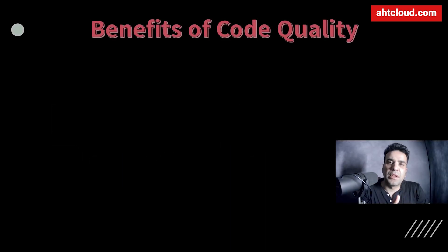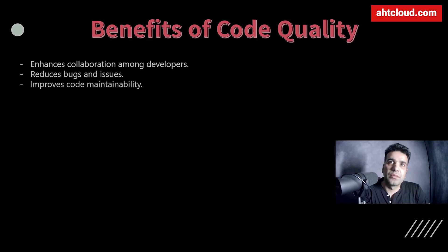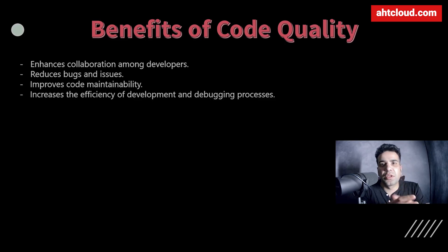Some of the benefits of code quality are: it basically creates a standard — everyone knows how they should name their variables, their functions, their classes, where to place files. It enhances collaboration between developers. It also reduces bugs and issues. And it also improves your code mentality. If your code base is all following the same pattern, it's really easy to pick up on it. And it also increases the efficiency of development and debugging time.